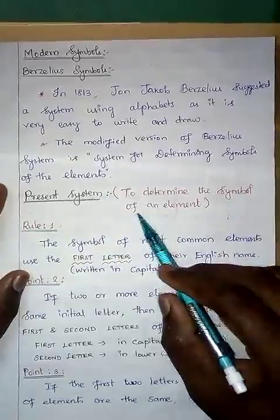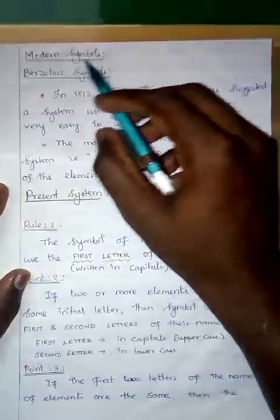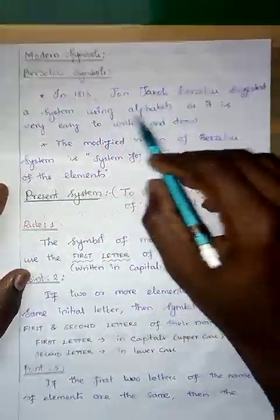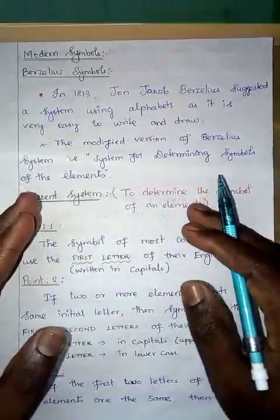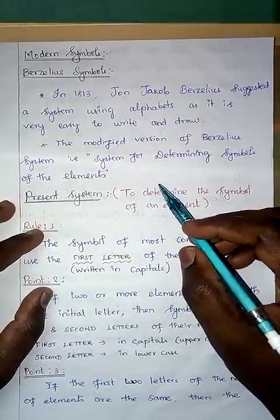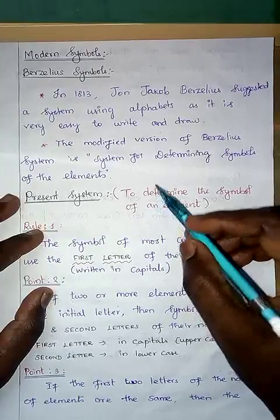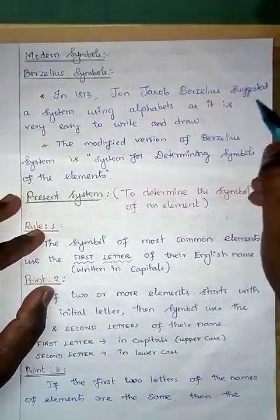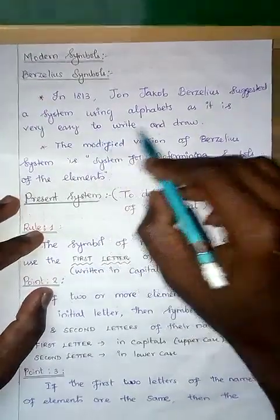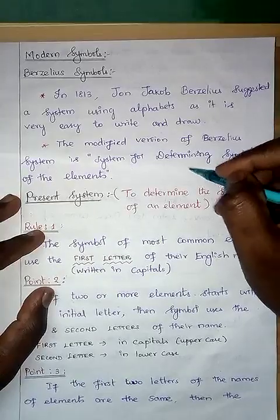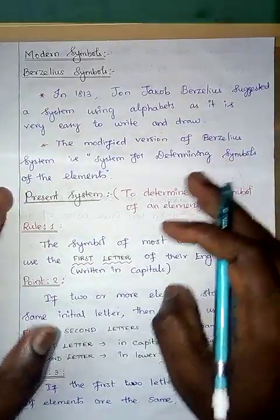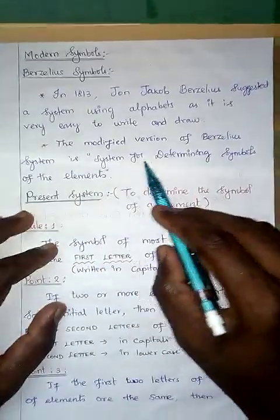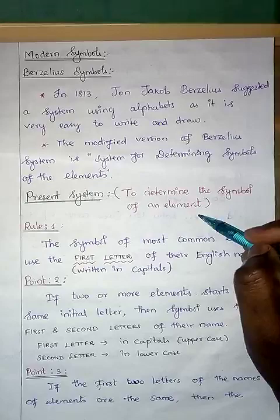We can call these modern symbols. The scientist John Jacob Berselius in 1813 suggested a system using alphabets. In a previous video we informed you that a pictorial symbol is very difficult to draw as well as print. Berselius suggested we can use alphabets of an English name of an element because it is easy to write and print. Currently this system is modified and we are using the modified version of the Berselius system for determining symbols of an element.